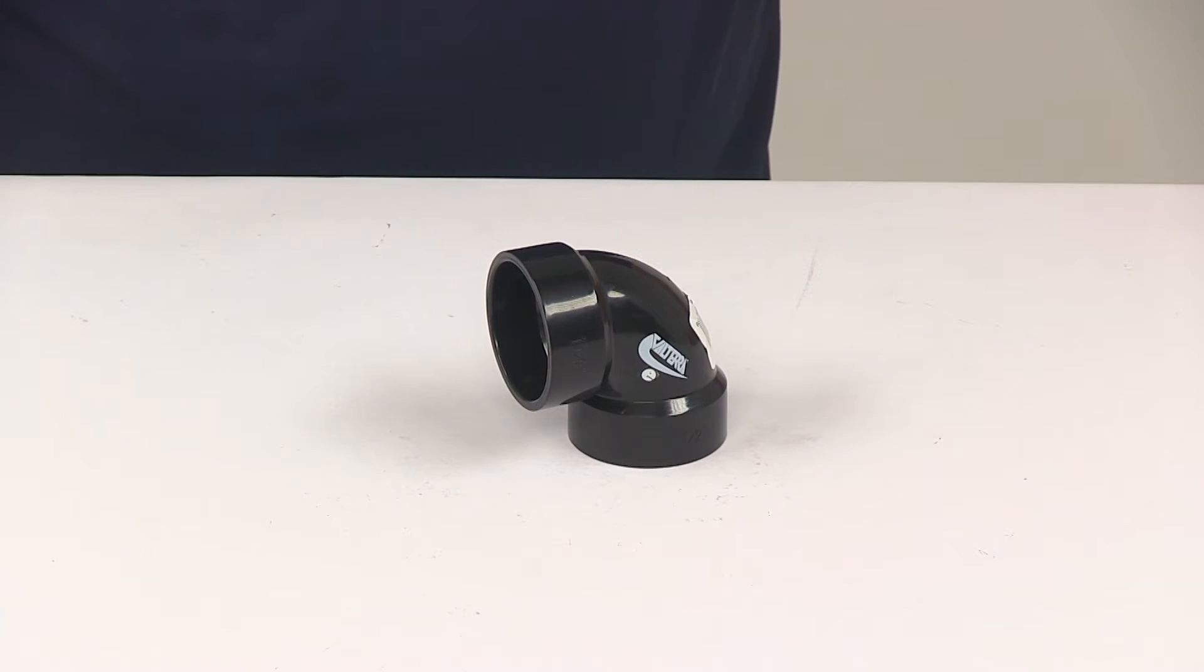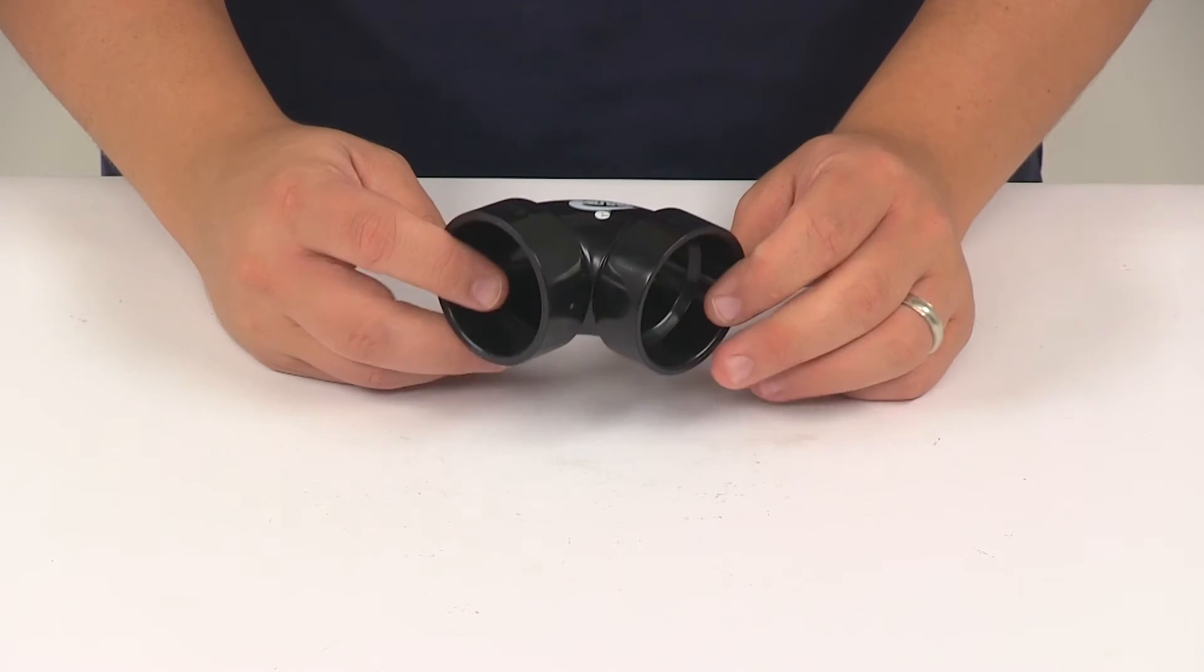Today we're going to be taking a look at the Valterra DWV 90 degree short turn elbow. The unit's made from a durable black plastic construction.